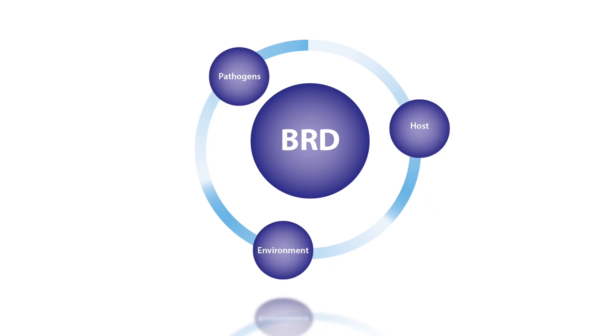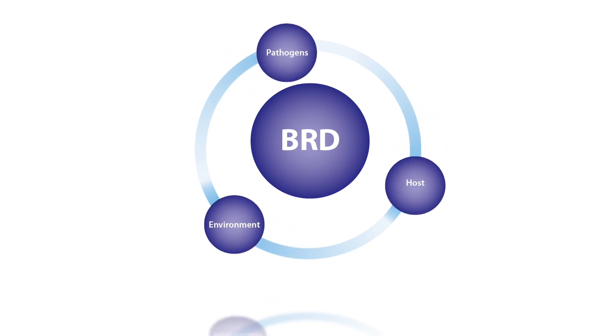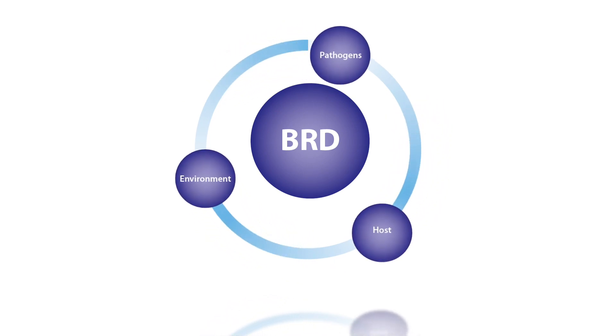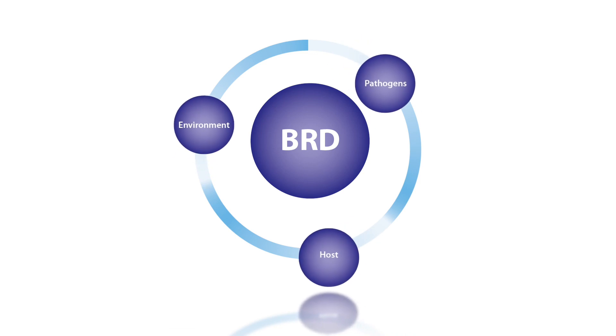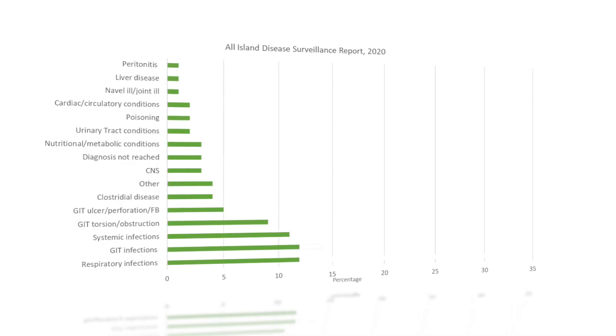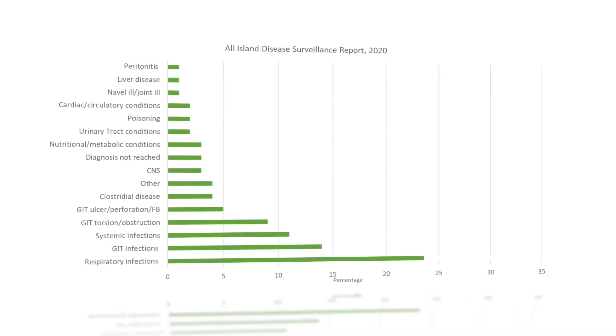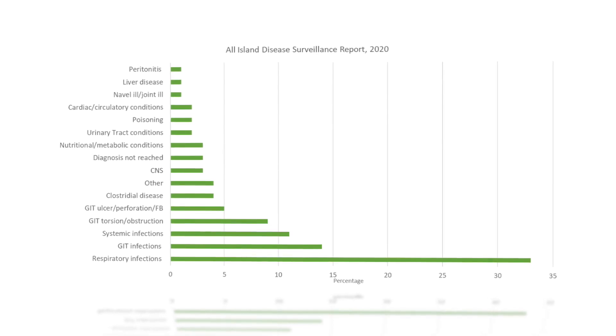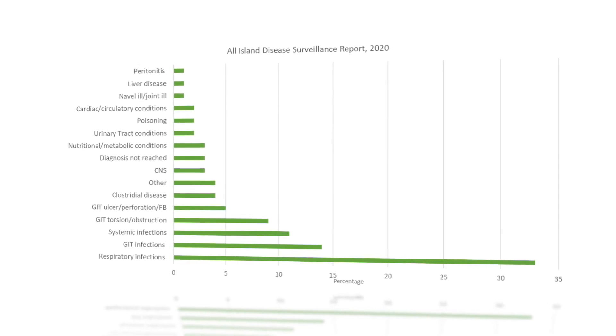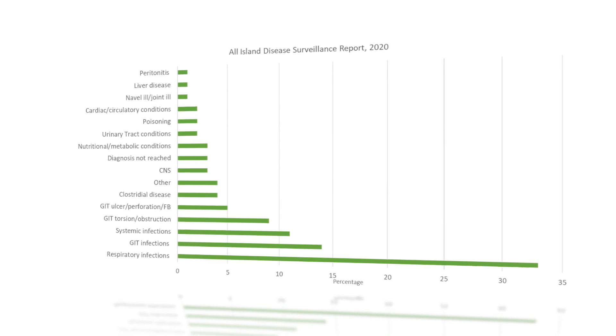Bovine respiratory disease is a complex disease entity that culminates in variable interactions between the animal, the pathogens — which are the viruses, bacteria and parasites — and the environment. Bovine respiratory disease is an umbrella term of which pneumonia is the main feature. Respiratory disease continues to be the most significant cause of death in cattle greater than one month of age in Ireland. This graph illustrates that respiratory infections accounted for 33% of deaths in calves between one and five months of age on post-mortem in regional veterinary labs across the country in 2020.